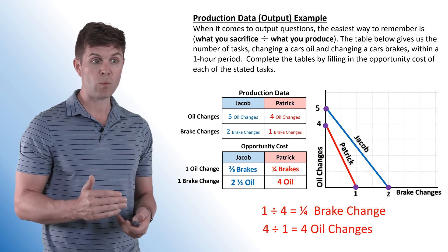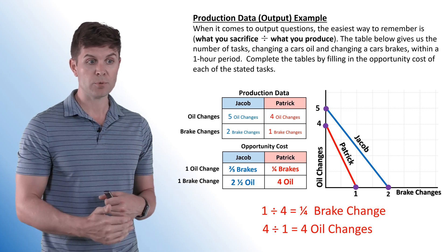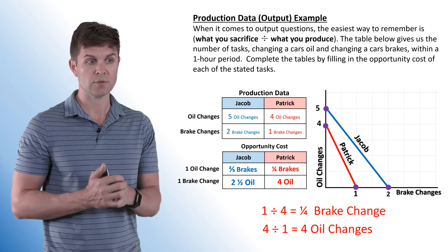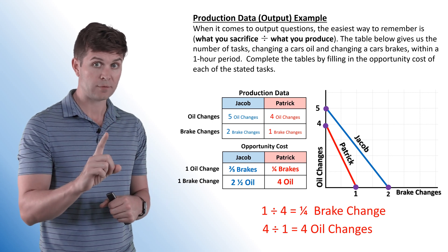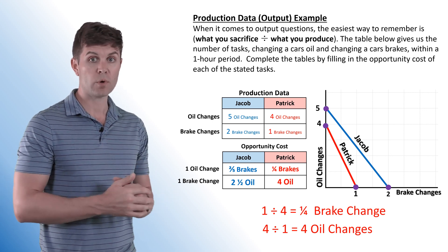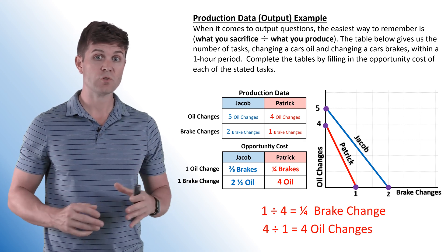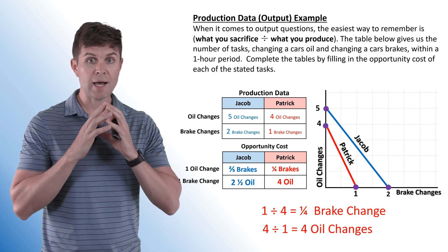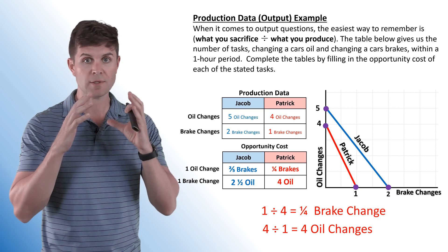The opportunity cost of a brake change for Patrick is four divided by one — what we sacrifice divided by what we produce — which comes to four oil changes. In the time it takes him to change one set of brake pads, he could do four oil changes. This is how you handle an output question — when they give you hourly, weekly, or daily production.